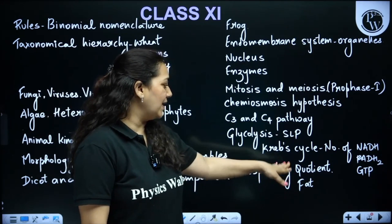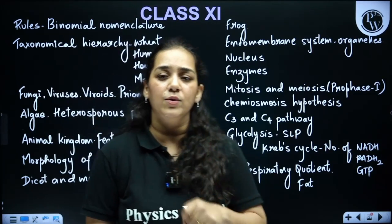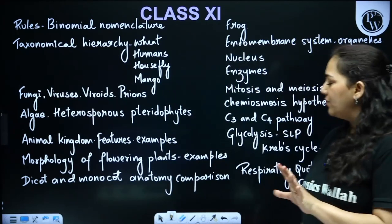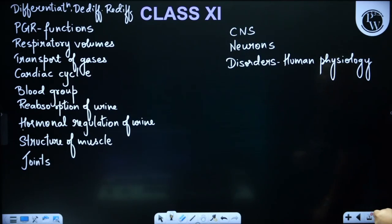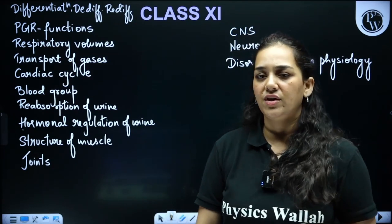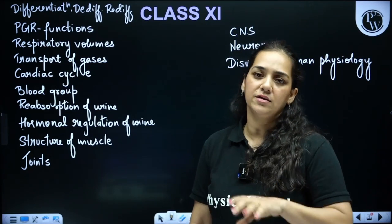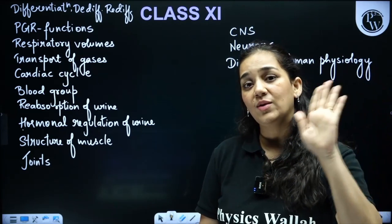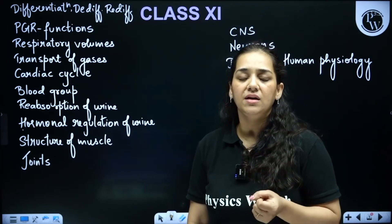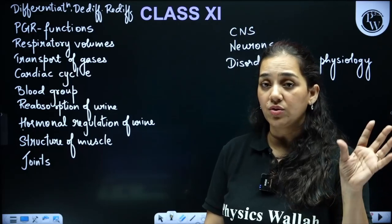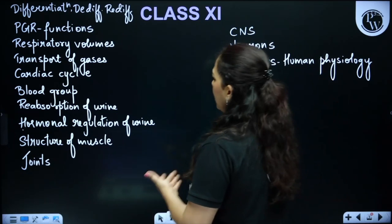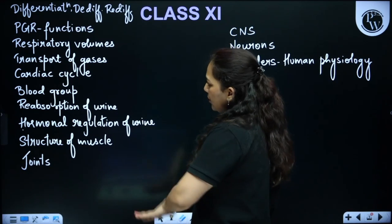Respiratory quotient is also important — a repeated question has been asked on the RQ of fats specifically, though carbohydrate RQ has also appeared. In Plant Growth and Development, the topics of differentiation, de-differentiation, re-differentiation, and plant growth regulators (PGRs) — all the hormones and their functions — are important. Functions are the most important to study; discovery details can also be covered but functions are the priority.